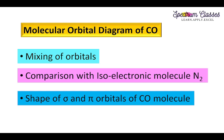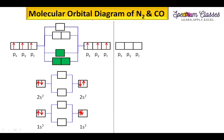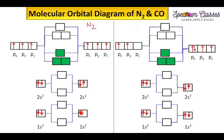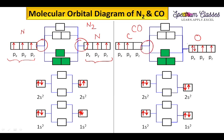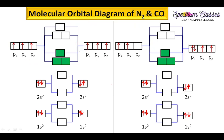This video is in continuation with the mixing of orbitals topic. Here is the nitrogen molecule molecular orbital diagram which I have already discussed in my previous video. Now, to draw the molecular orbital diagram for CO: both atoms in N₂ are nitrogen, but here one side we have C and the other side we have O. The energy levels are different for the atomic orbitals of carbon versus oxygen.